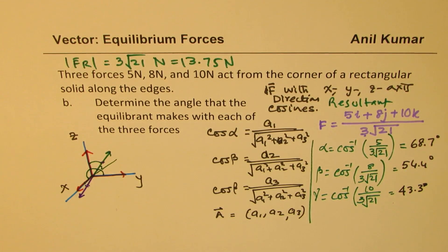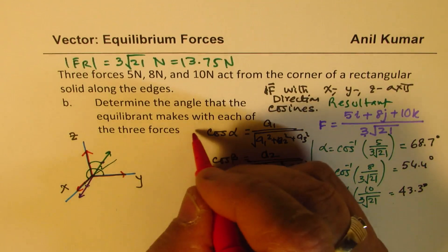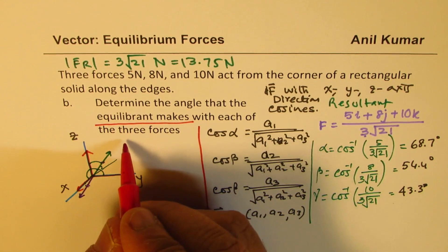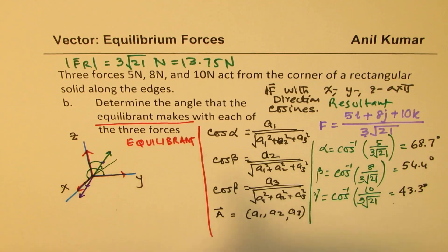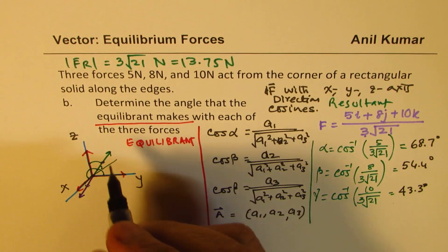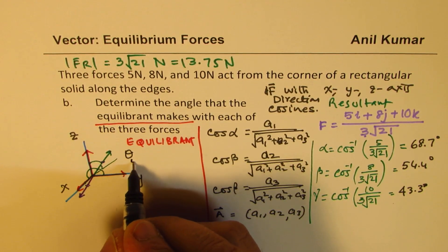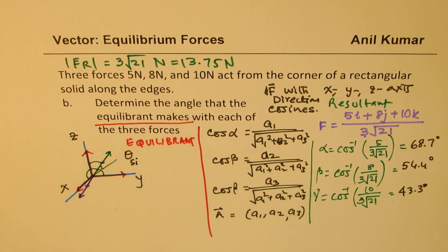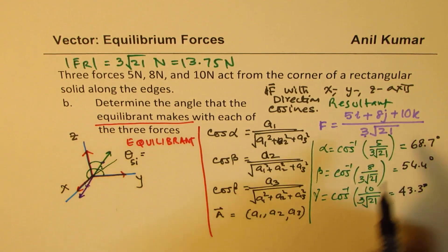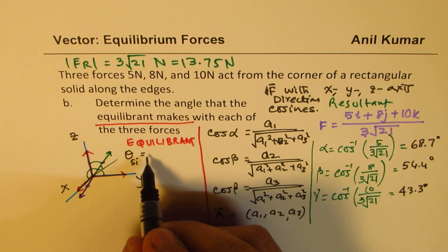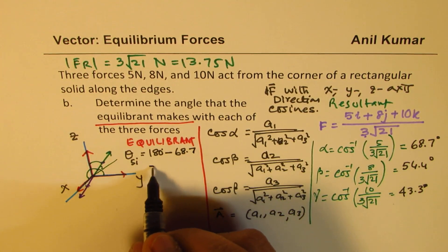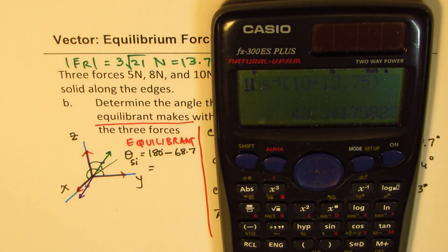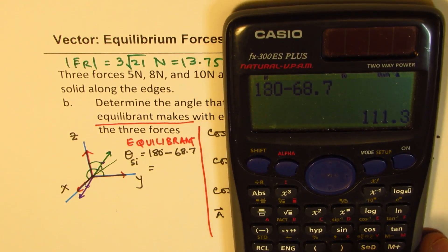Now let's find the equilibrant angles. Since the equilibrant acts in the opposite direction, each of its angles is 180° minus the corresponding resultant angle. The equilibrant angle with the 5 N force (along i) is 180° − 68.7° = 111.3°.